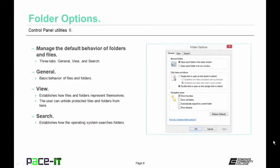The Folder Options utility is of special importance to a technician. From here you can manage the default behavior of folders and files across three tabs — General, View, and Search. From the General tab, make adjustments to basic behavior of files and folders. From the View tab, establish how files and folders are represented — importantly, the user can unhide protected files and folders here. The Search tab establishes how the operating system searches folders.